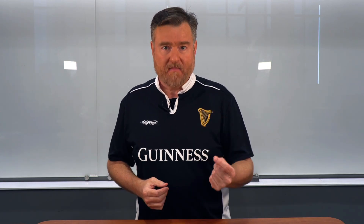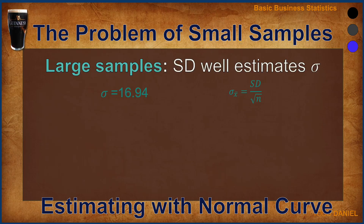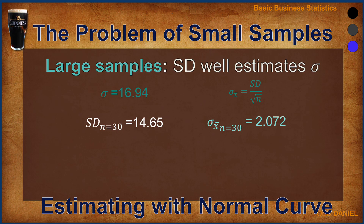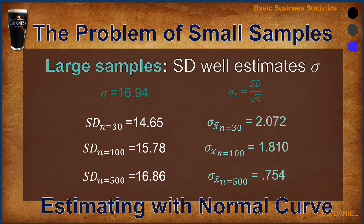When you have a large sample size, the sample standard deviation well estimates the population standard deviation. I modeled this example from a representative population with a true population mean of 16.94. For sample sizes of 30, the sample standard deviation was quite close with an error rate of 2.07 points. As sample sizes increased to 100 or up to 500, the standard error of the mean continued to drop, yielding very accurate confidence intervals.